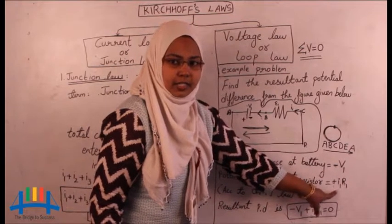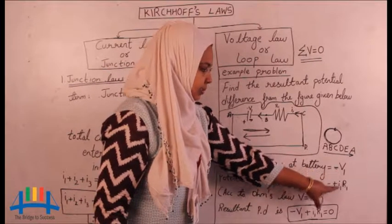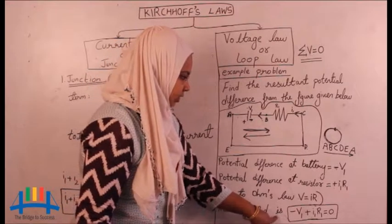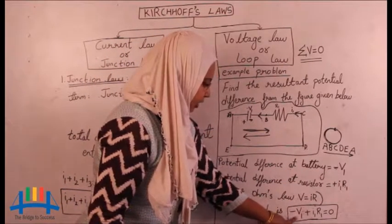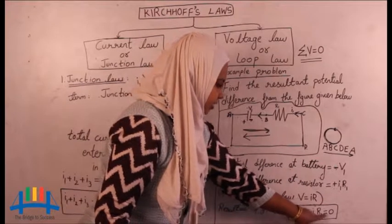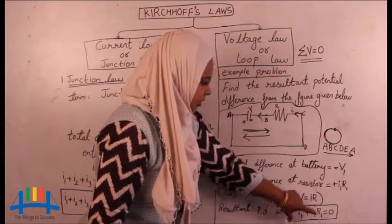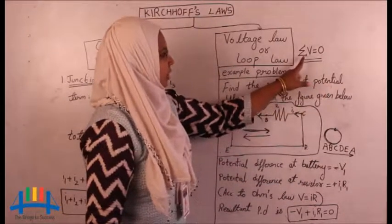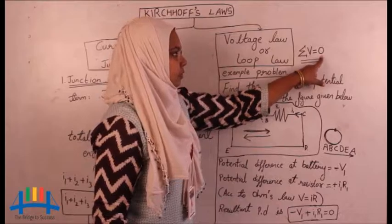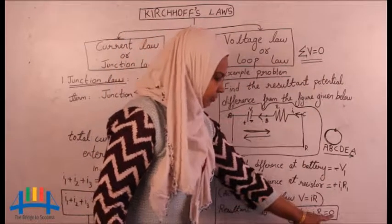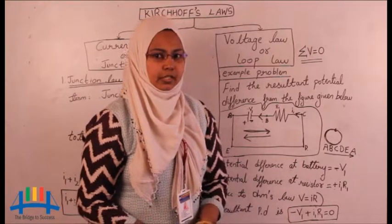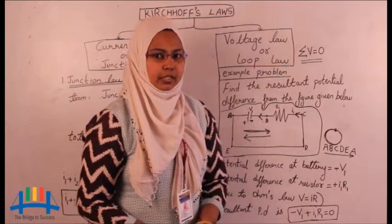So we got the individual potential differences: minus V1 and plus I1 R1. If we do the sum of these, we get the resultant potential difference: minus V1 plus I1 R1 equals 0. This is the sum of potential differences equal to 0, which is what the second law states. By this we end our topic on Kirchhoff's law. I hope you all have understood this.